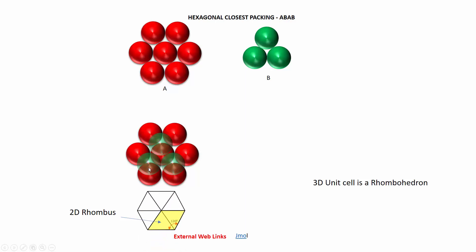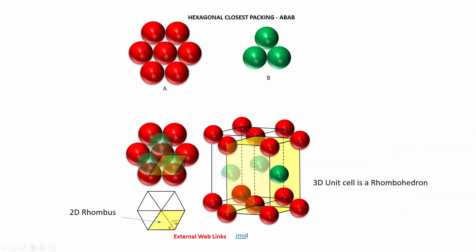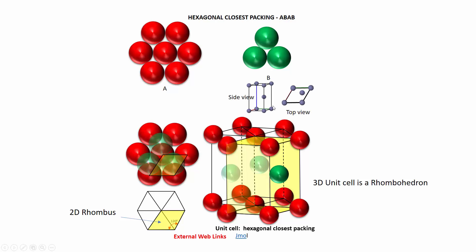If we look at the unit cell, let's look at these four atoms here. That's actually the base of what's going to be our unit cell — it's in the form of a rhombus. If we extend that into higher dimensions, you can see we get this yellow rhombohedron, with a rhombus for a base on the bottom and top layers A and A, and layer B in the middle.